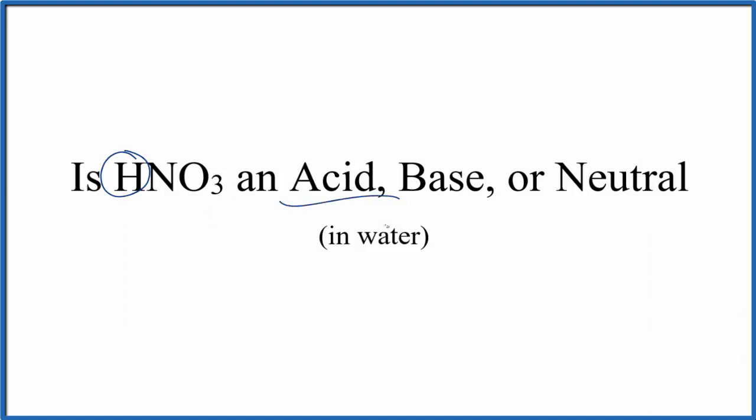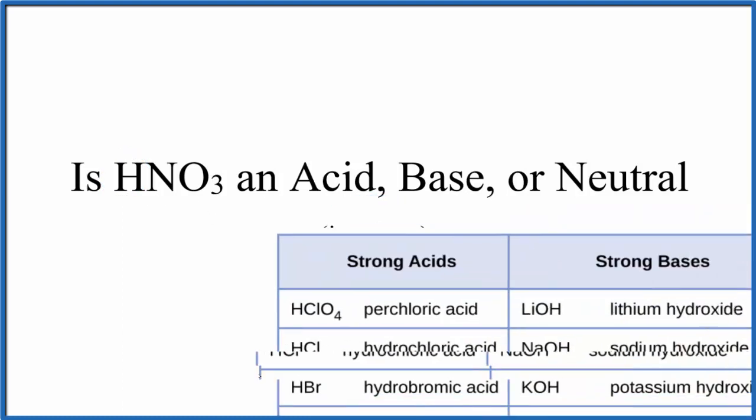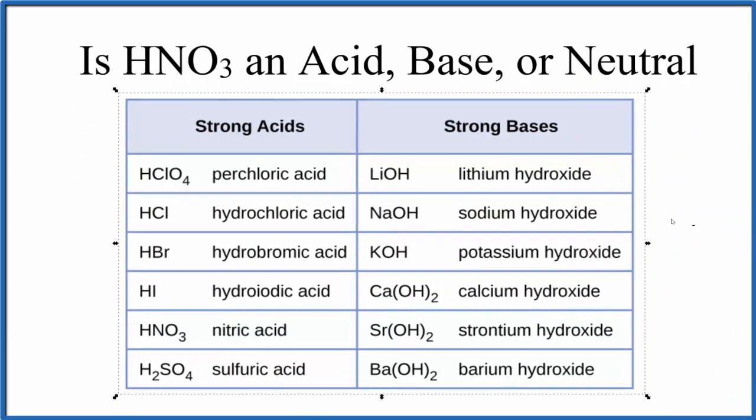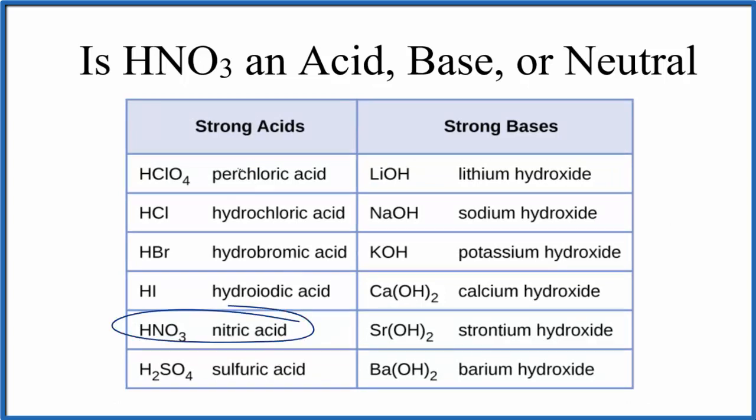It's helpful to look at this table with the strong acids and bases. These are the common strong acids and bases that you'll see quite frequently in chemistry. As we look down our list, right here is nitric acid. Nitric acid is a strong acid. Let's talk a bit about what that means.